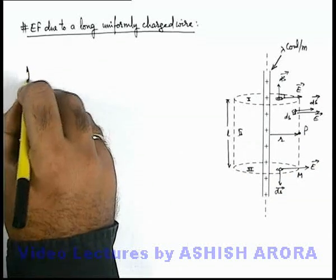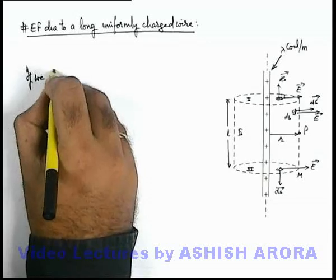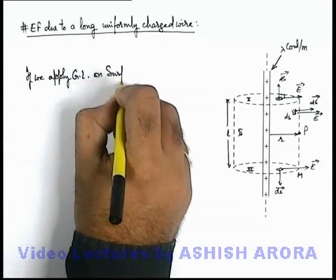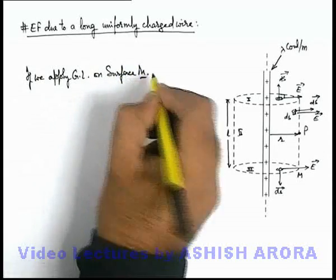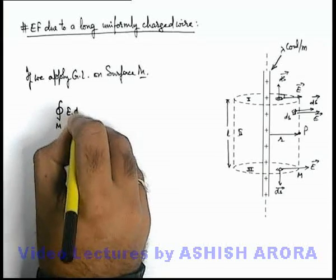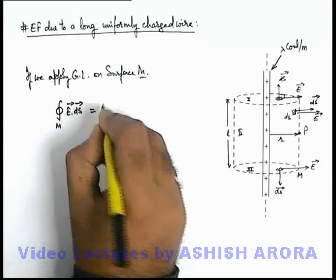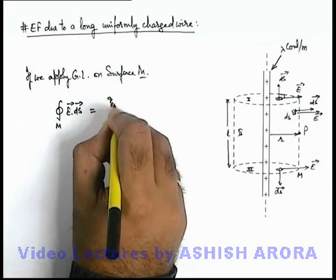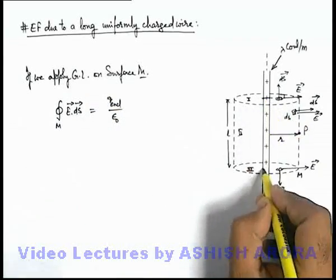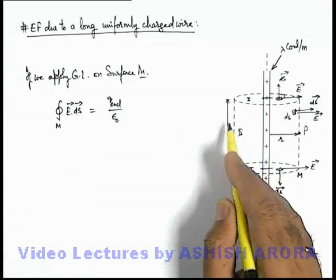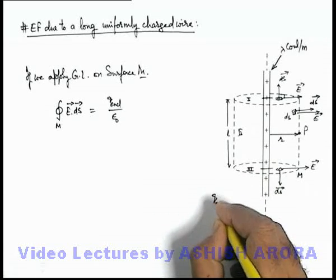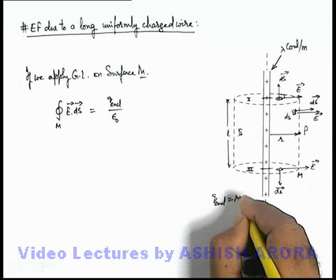Now, applying Gauss's law on surface M: the total flux coming out from surface M is the integral of E dot dS over the closed surface, equal to the total enclosed charge divided by epsilon-not. Within this Gaussian surface, a total length l of the line charge is enclosed, so q-enclosed equals lambda times l.